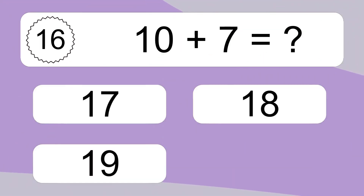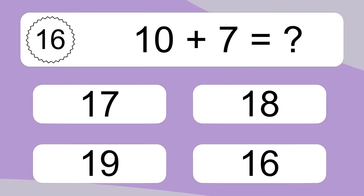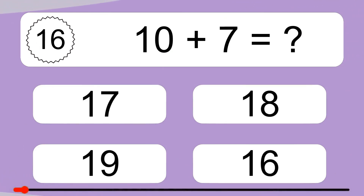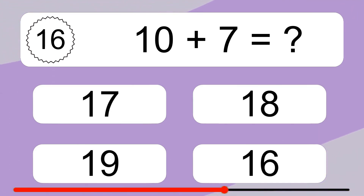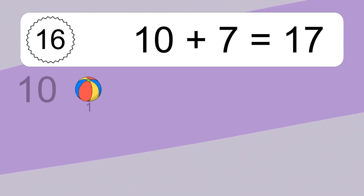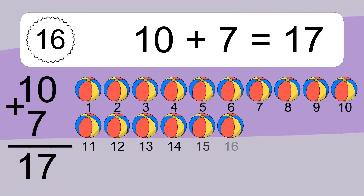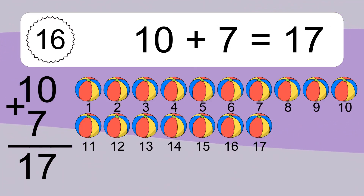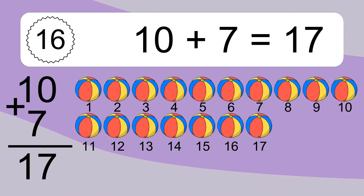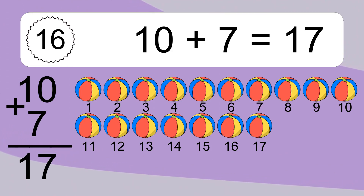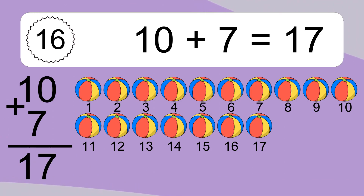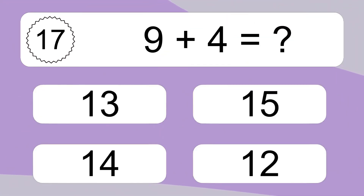10 plus 7 equals what? 10 plus 7 equals 17. Let's count it. 1, 2, 3, 4, 5, 6, 7, 8, 9, 10, 11, 12, 13, 14, 15, 16, 17. 9 plus 4 equals what?